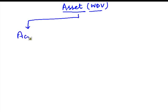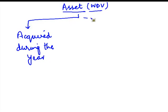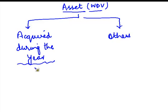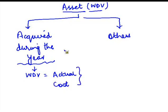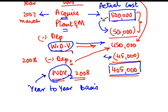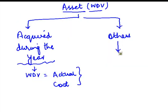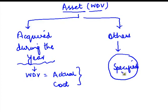For the purpose of WDV, assets are classified into two categories: one which are acquired during the year, and others which could have been acquired in any prior year. For assets acquired during the year, the written down value will be equal to the actual cost. For other assets, the written down value is to be computed in a specified manner.